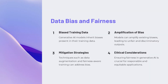Generative AI models can inherit biases present in their training data, which can lead to unfair and discriminatory outputs. These biases can be amplified as the models learn and generate new content, further perpetuating unfairness. However, there are mitigation strategies that can be employed, such as data augmentation and fairness-aware training, to address these biases. Ensuring fairness in generative AI is crucial for responsible and equitable applications, and we must be vigilant in identifying and addressing biases to create inclusive, unbiased AI systems.